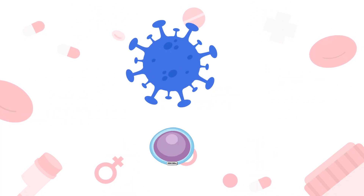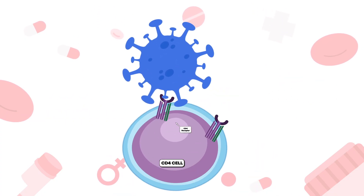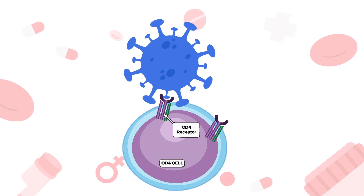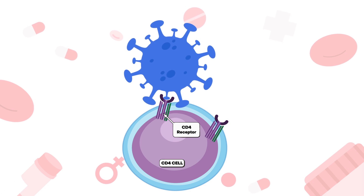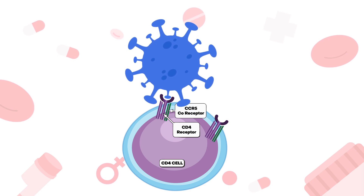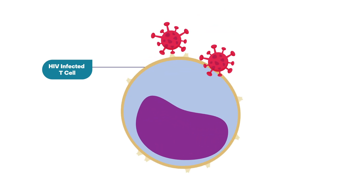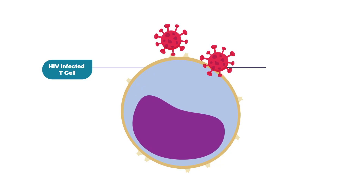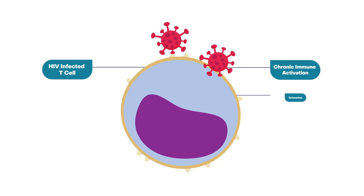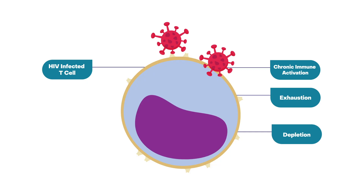To infect most cells, HIV must bind to the CD4 receptor and one of two major co-receptors, CCR5 or CXCR4, expressed on T lymphocytes. In many HIV-infected patients, the virus ultimately induces a state of chronic immune activation, leading to T cell exhaustion and depletion, tissue fibrosis, and immune failure.